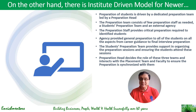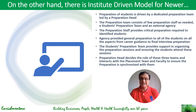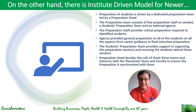The student preparation team basically consists of 10 to 12 students from both years. They provide support in organizing the sessions for preparation, ensuring students attend these sessions, and doing all the legwork that is needed. The preparation head decides the roles of these three teams — who will do what — and interacts with the placement team and faculty to ensure that preparation is synchronized with the rest of the community.